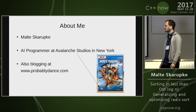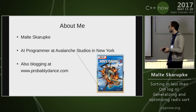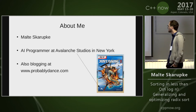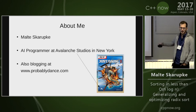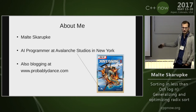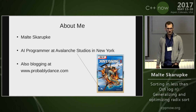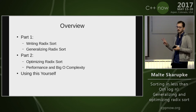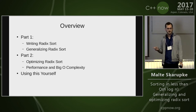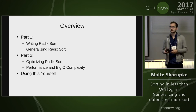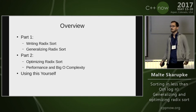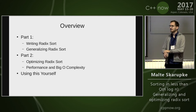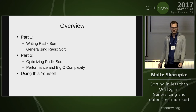My name is Malte Skarupke. I'm an AI programmer at Avalanche Studios in New York—I make video games like Just Cause 3. I also blog at probablydance.com. This work came out of my own private work, though I also use it at Avalanche Studios. There are two parts to this talk: part one, we write a Radix Sort and generalize it; part two, we optimize it and at the end cover how you can use this yourself.